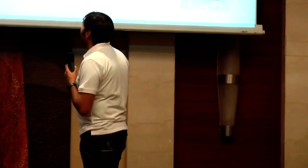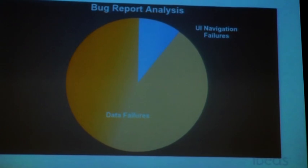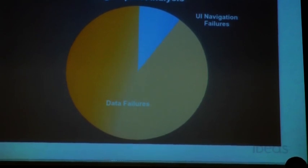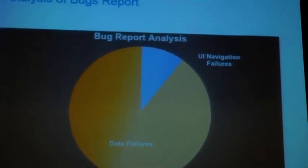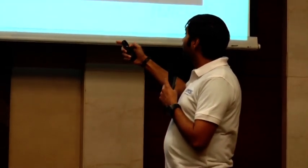When we pulled out the data — surprise surprise — a good 90% of those failures were coming because of data failures, which means business logic failures or something else broken. Maybe a very small percentage was actually from UI navigation failures or something on the UI not behaving properly. So my question was: what do you do with this data? Should our focus be on making our UI automation tests better, or should we be looking at something else? A vast majority of these failures had nothing to do with the UI at all.